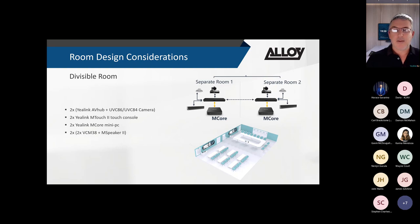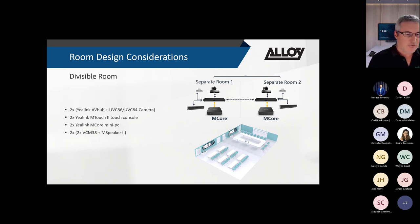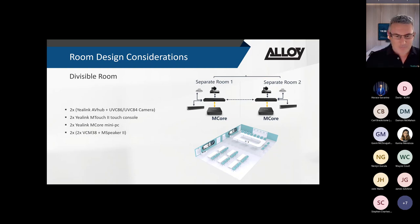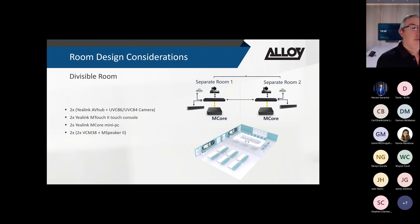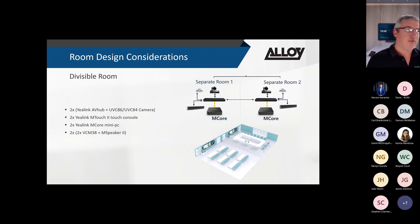The divisible room solution requires Yealink audio equipment - it cannot be done with a DSP and a single click from the M-Touch. With a DSP, it becomes a two-stage process: clicking combine room on the M-Touch, then also manually switching the audio through the DSP separately.